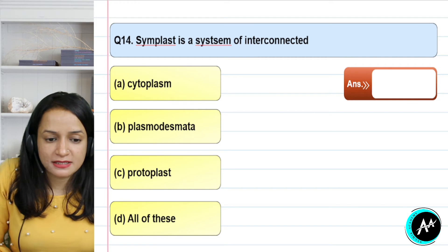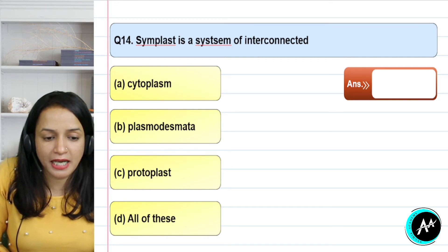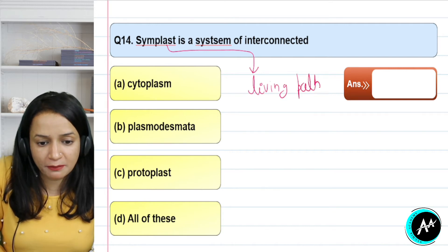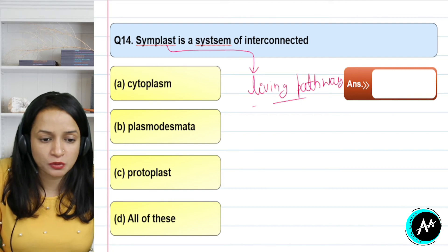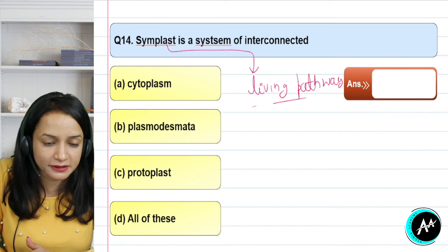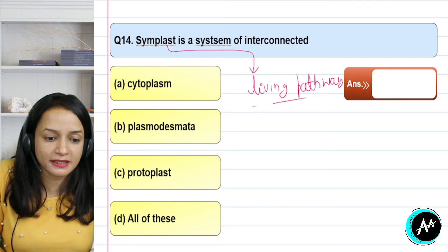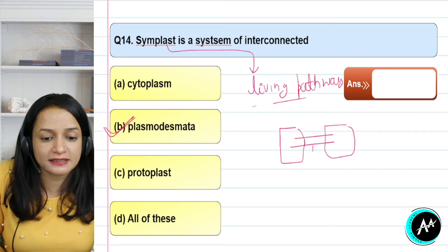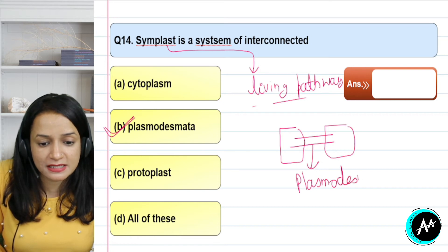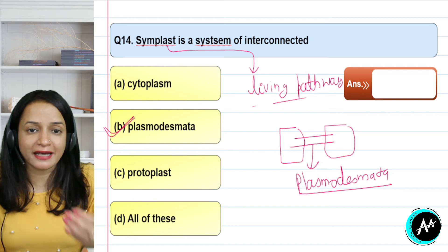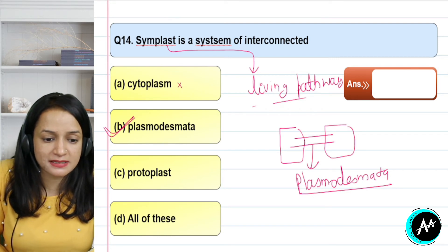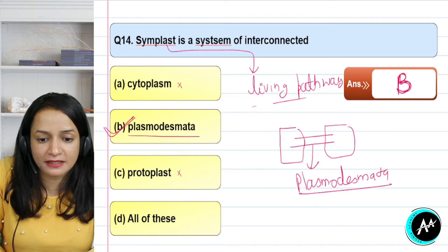Question 14: symplast is a system of interconnected... Symplast and apoplast are two pathways. Symplast is the living pathway and apoplast is a non-living pathway for material transport from one cell to another. In plants, this living pathway is made by plasmodesmata, because in plant cells the cytoplasm is directly connected to each other through tunnels called plasmodesmata — a cytoplasm-to-cytoplasm connection between plant cells. It is not cytoplasm alone or protoplasm — it is the plasmodesmata. The correct answer for question 14 is option B.